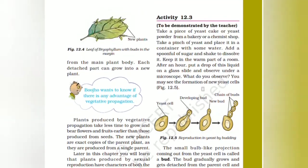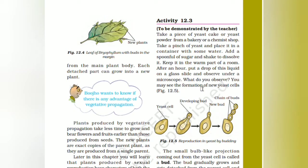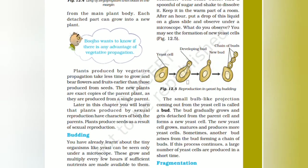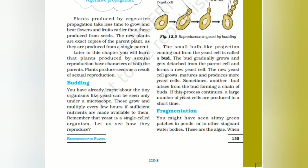Put a drop of this liquid on a glass slide and observe under a microscope. You may see the formation of new yeast cells. A small bulb-like projection comes out from the yeast cell — this projection is termed a bud. The bud gradually grows and gets detached from the parent cell to form a new yeast cell. The new yeast cell grows, matures, and produces more yeast cells. Sometimes another bud arises from a bud, forming a chain of buds.